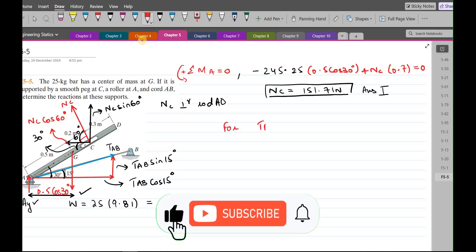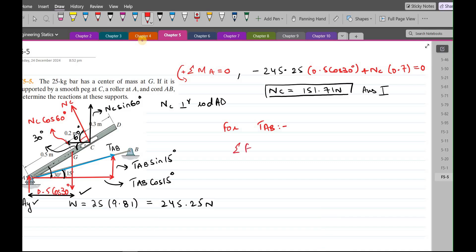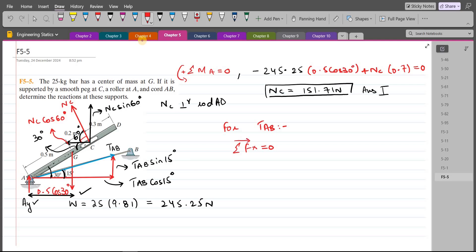So now we have resolved the forces into their respective components. So for TAB force we can do summation of forces in x direction equals to zero. I am considering the right-hand side as positive. So we have TAB cos 15 minus NC cos 60, and it is negative because it is acting in the left-hand side direction, equals to zero. So TAB is equal to NC, which is 151.71, times cos 60 divided by cos 15. So from here TAB comes out to be 78.53 Newtons. And this is our second answer.